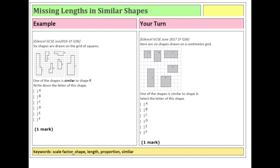We are looking for the shape that is similar to shape A. Shape A is a square — there is only one other square shape on that grid. Shapes B, C, D and E are all rectangles; they haven't kept the same proportion. In a square, all sides are the same length as they are in A. Shapes B, C, D and E have stopped having all their sides the same length. Shape E is the only one still in proportion — it is actually exactly the same shape — so your answer is shape E.